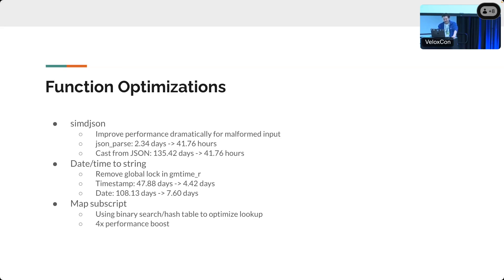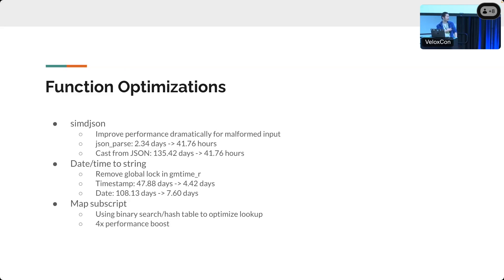There is also optimization for datetime-to-string. We discovered an inefficiency in gmtime_r — it takes a global lock to read something that's really not needed. Why do we need a timezone lock when doing a to-string operation? We re-implemented gmtime_r and the improvement is more than 10 times.